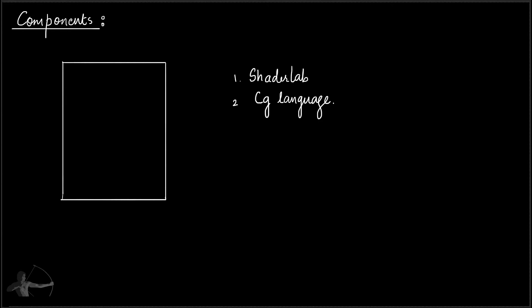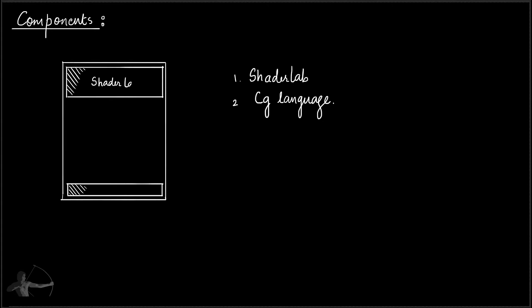The structure of our shader will look like this. These two blocks will be the blocks of ShaderLab, and in between this space is where we will write our CG code. ShaderLab is a declarative language which helps Unity to create material inspectors — in other words, it helps Unity to create the GUI based on the type of property we create for the shader.